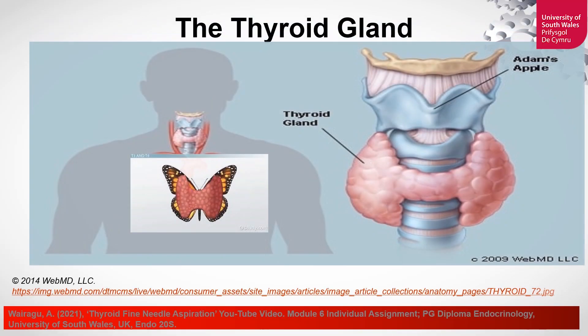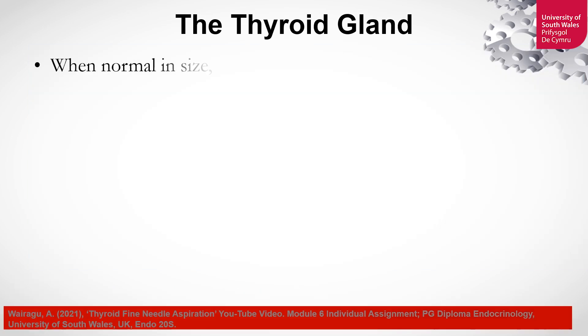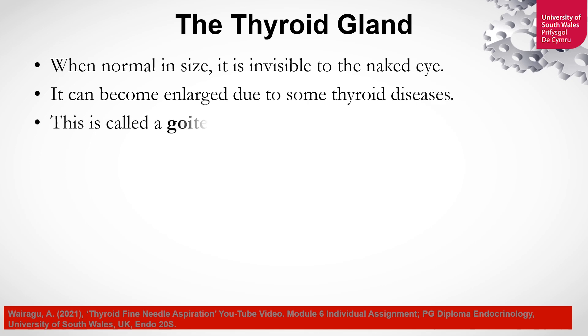I will show you the thyroid gland. As you can see, it's located at the anterior part of the neck and it has the shape of a butterfly. In the normal size, the thyroid gland is not visible to the naked eye. It can become enlarged due to some thyroid diseases, and this is called a goiter.